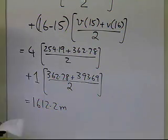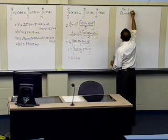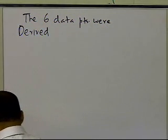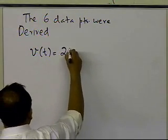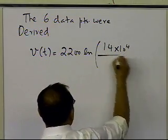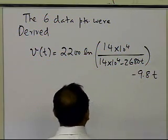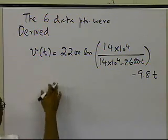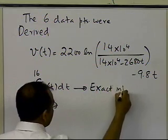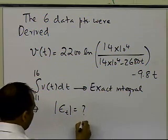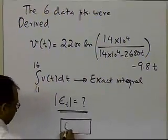Now, how good is this result? These six data points were derived from the exact formula: v(t) = 2200 × log(14×10⁴ / (14×10⁴ − 2680t)) − 9.8t. You can use that expression to calculate the exact integral from 11 to 16 and find the relative true error. That should give you some confidence in understanding why this method works better than the average velocity method. And that's the end of this segment.